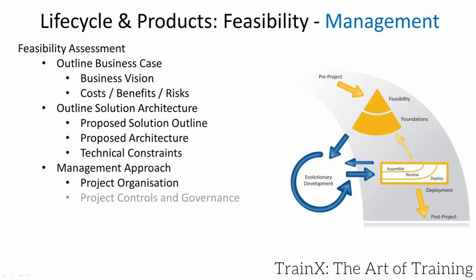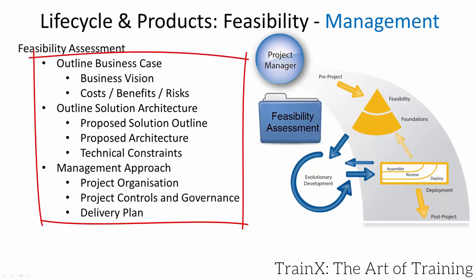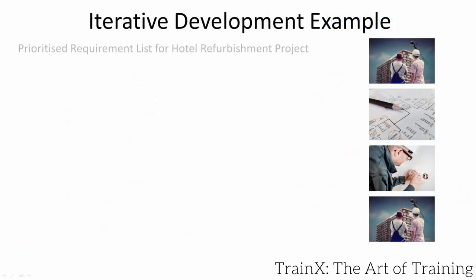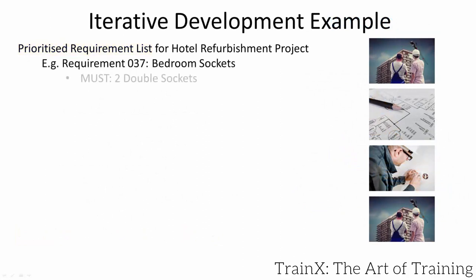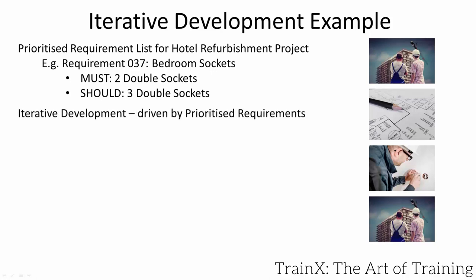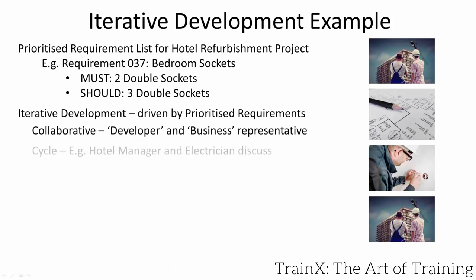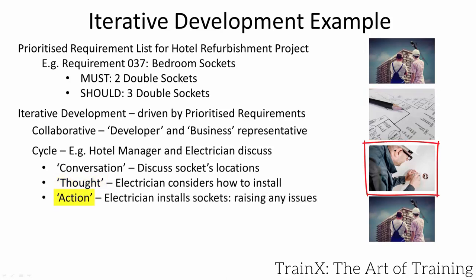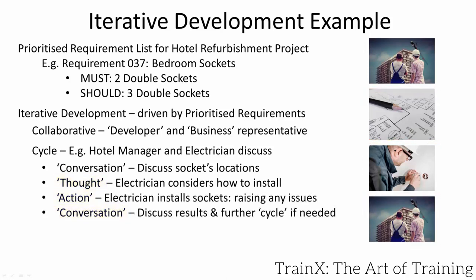The project governance — in our example the CEO — then decides whether to progress to foundations. For a hotel refurbishment example, the PRL states each bedroom must have two and should have three double sockets. If these were on the architect's initial drawing, this could be big design up front. Using Agile PM's enough design up front approach, the hotel manager and electrician agree the positions of the sockets using their experience. The iterative cycle consists of conversation, thought, action, then conversation. If adjustments are needed, a further cycle ensues. The Agile PM role for the hotel manager is business ambassador and for the electrician is solution developer.